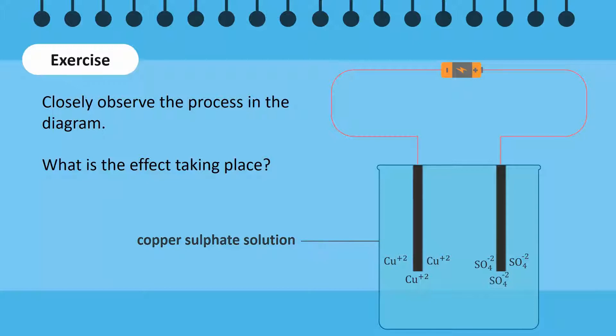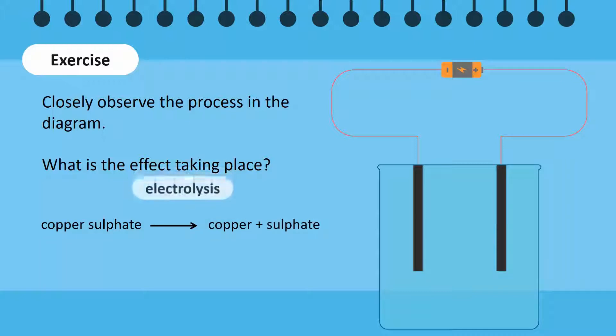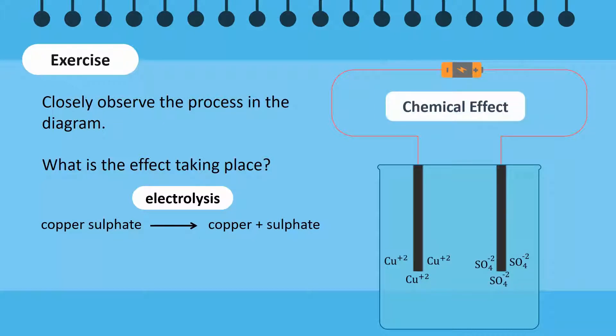Notice that the battery is connected to positive and negative electrodes that are dipped in a solution of copper sulphate. When the current passes through the solution, copper sulphate breaks down into copper and sulphate through electrolysis. Copper is collected through the negative electrode and sulphate through the positive electrode. This is an example of the chemical effect caused by the flow of a current.